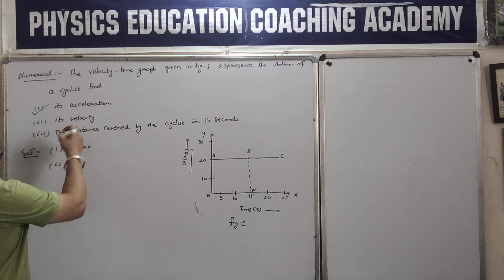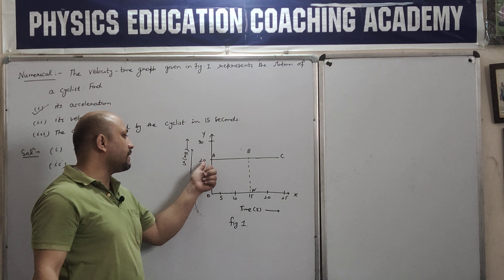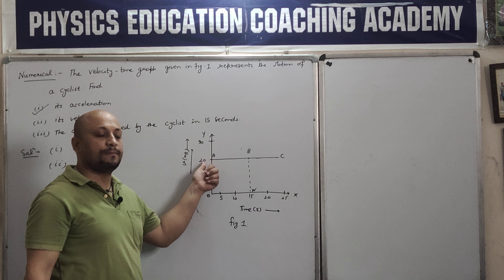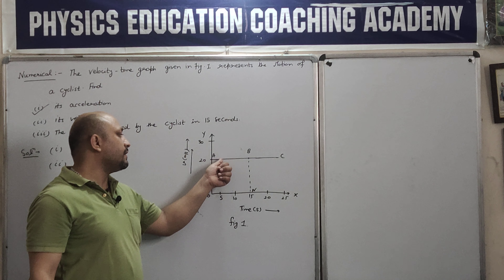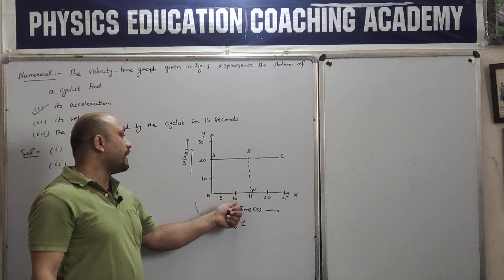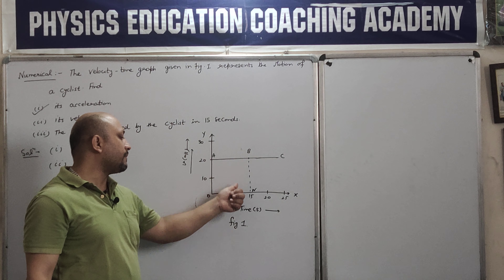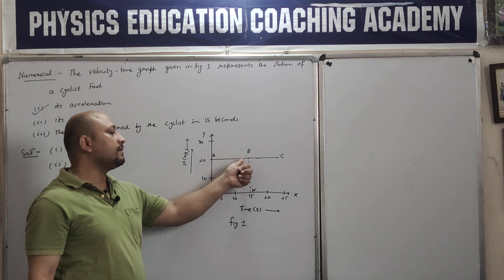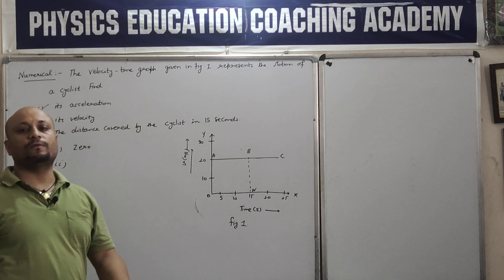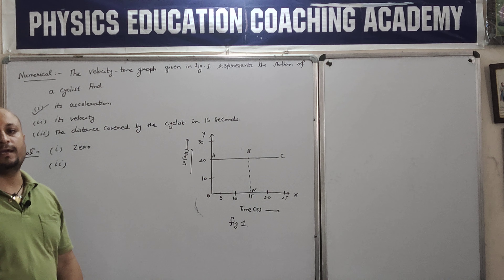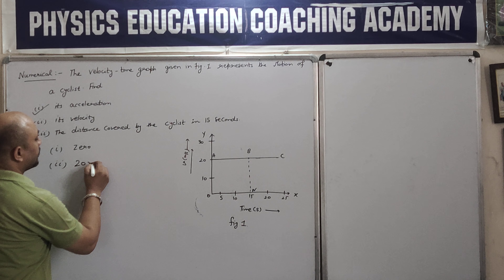Second, it asks for its velocity. So look carefully: at t = 0 the velocity was 20 m/s, at 5 seconds it was 20 m/s, at 10 seconds it was 20 m/s, at 15 seconds it was 20 m/s. So there is no change in velocity. The answer is 20 meter per second.